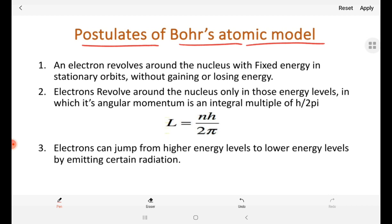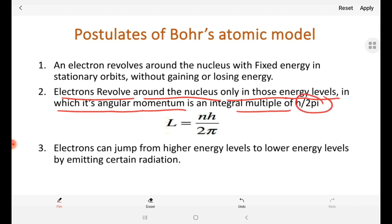Postulates of Bohr's atomic model - this is very important for your board examinations as well as for your CET. First: an electron revolves around the nucleus with fixed energy in stationary orbits, without gaining or losing energy. Second: electrons revolve around the nucleus only in those energy levels in which its angular momentum is an integral multiple of h by 2 pi.